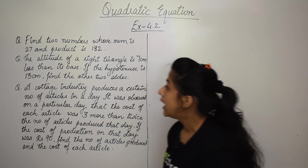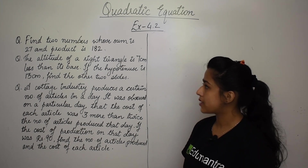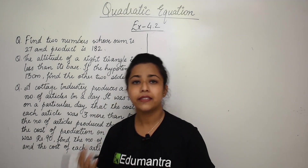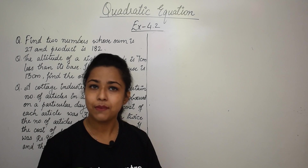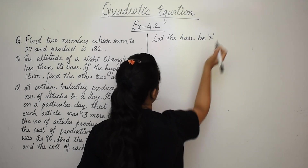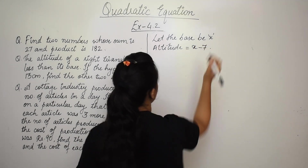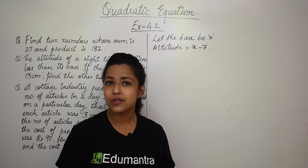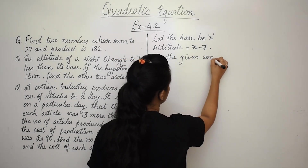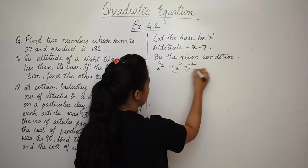Next question: the altitude of a right triangle is 7 cm less than its base. If the hypotenuse is 13 cm, find the other two sides. Let the base be x, so the altitude will be x - 7. Since we know the hypotenuse, we apply the Pythagorean theorem: x² + (x - 7)² = 13².